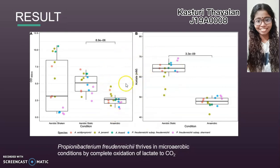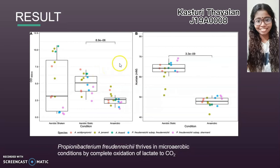From this graph, we can conclude that the availability of oxygen can enhance biomass formation in static conditions for all strains, although strand-to-strand variation is enlarged. However, at high oxygen levels in the aerobic shaken condition, biomass production becomes lesser compared to anaerobic conditions. Several strains were able to produce similar or higher biomass compared to anaerobic conditions and are therefore more tolerant to higher oxygen levels.